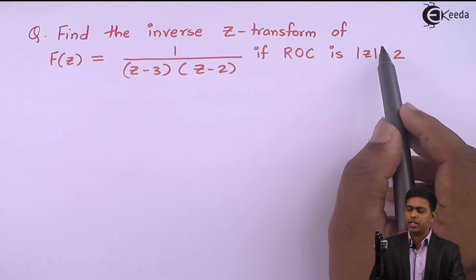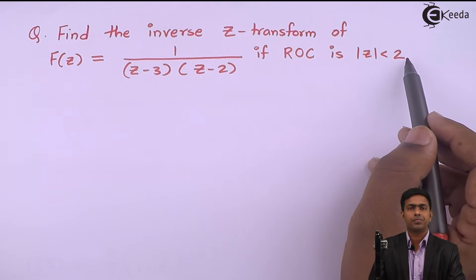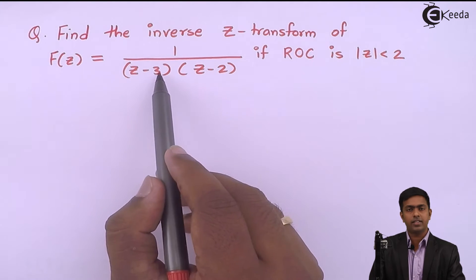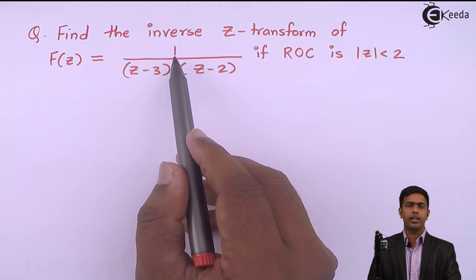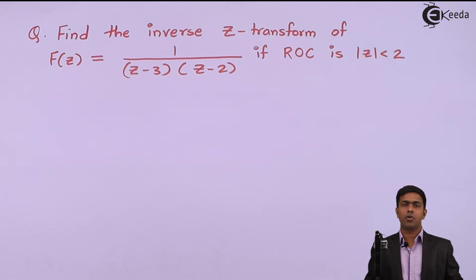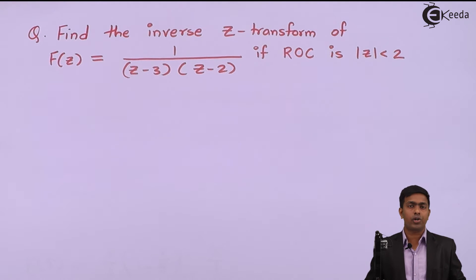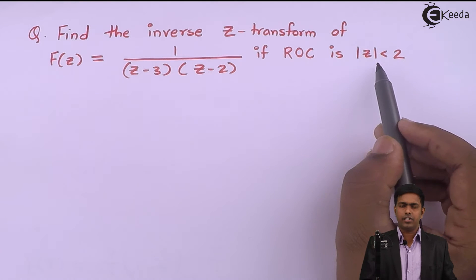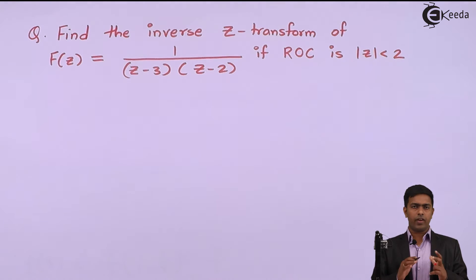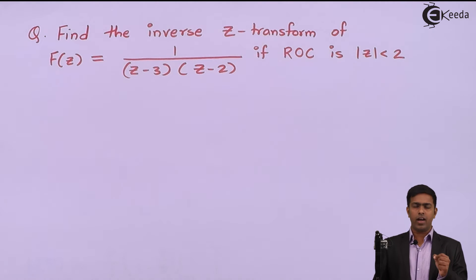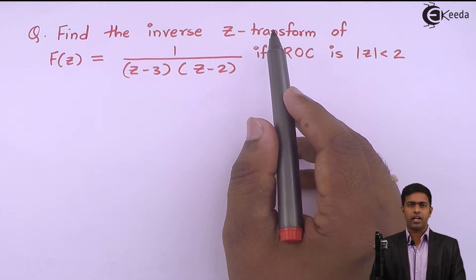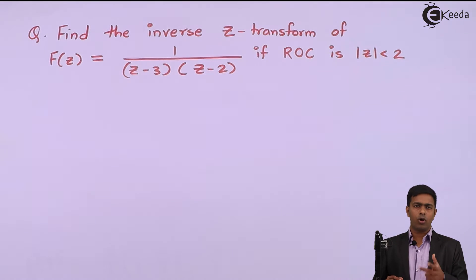Similarly, if z becomes greater than 2, say z = 3, then 3 minus 3 = 0, we again get infinity, and again the z-transform is not convergent. So the condition |z| < 2 gives us the set of points where the z-transform converges.